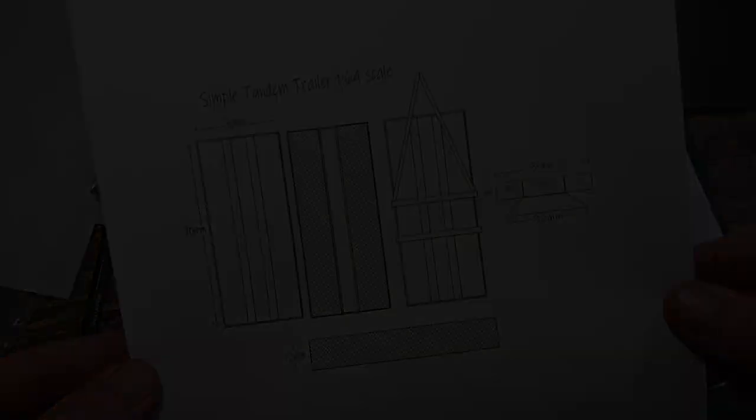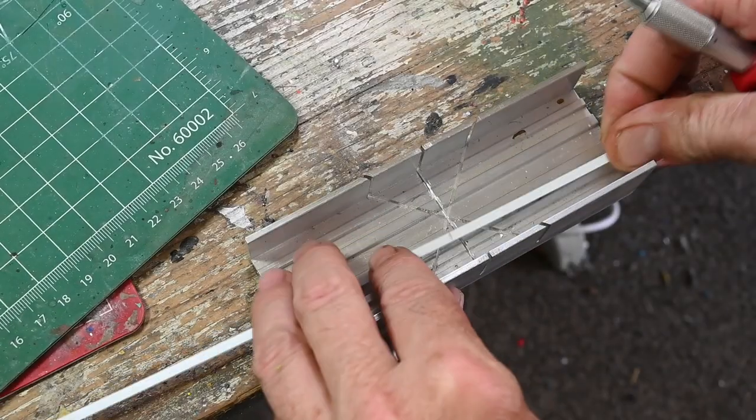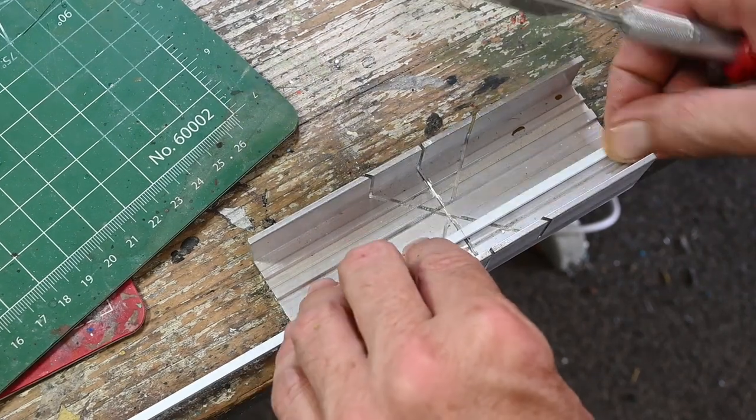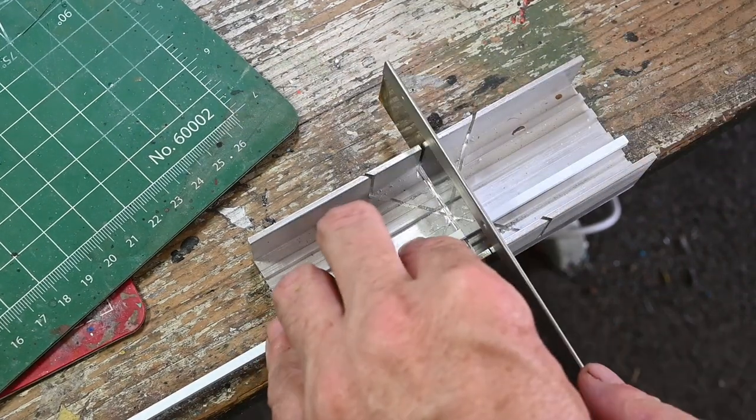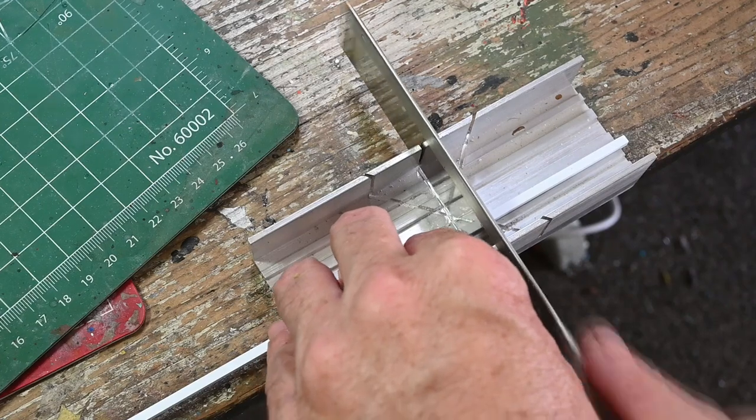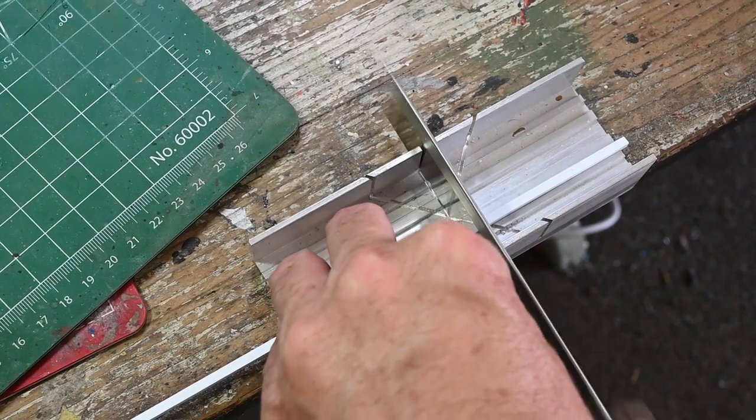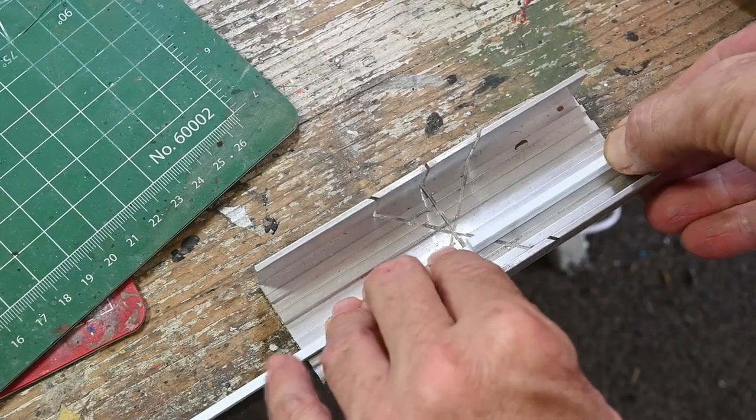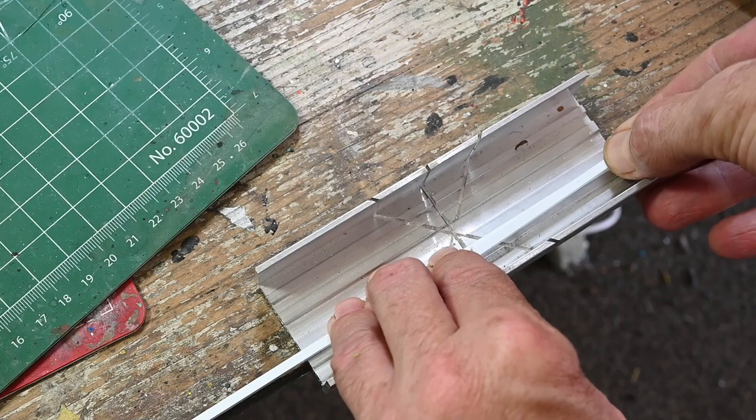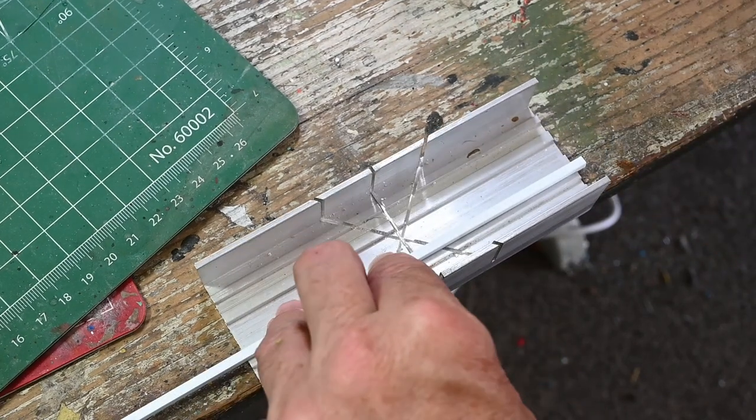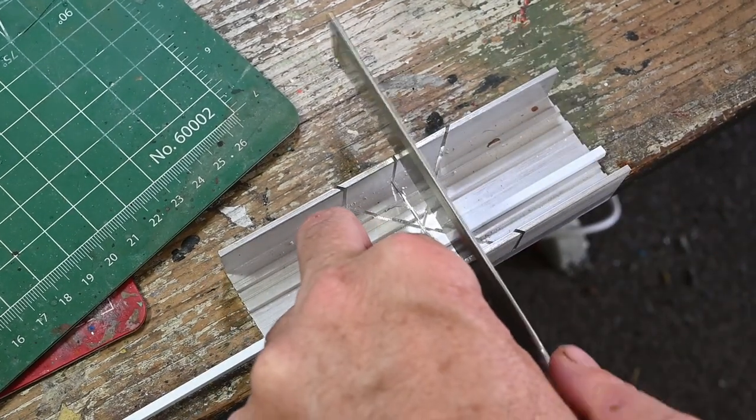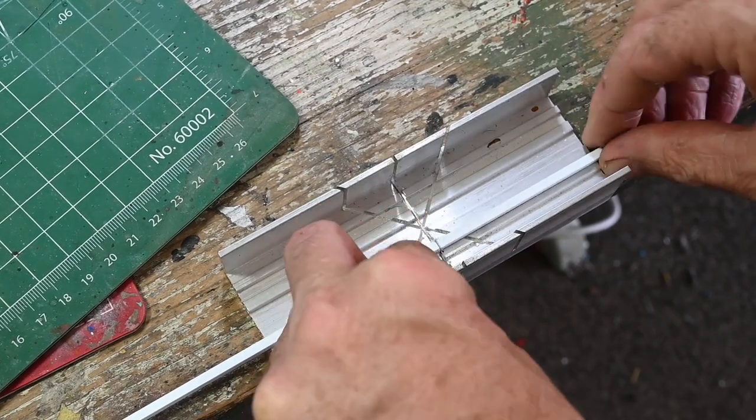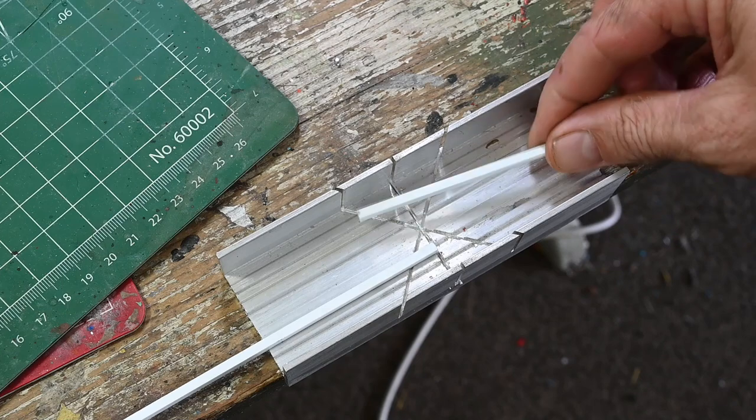I'll start out by cutting 2 70 millimeter lengths of the 3.2 millimeter square rod. You can just cut this with your craft knife or whatever if you don't have a miter block, but it helps to make nice straight cuts.